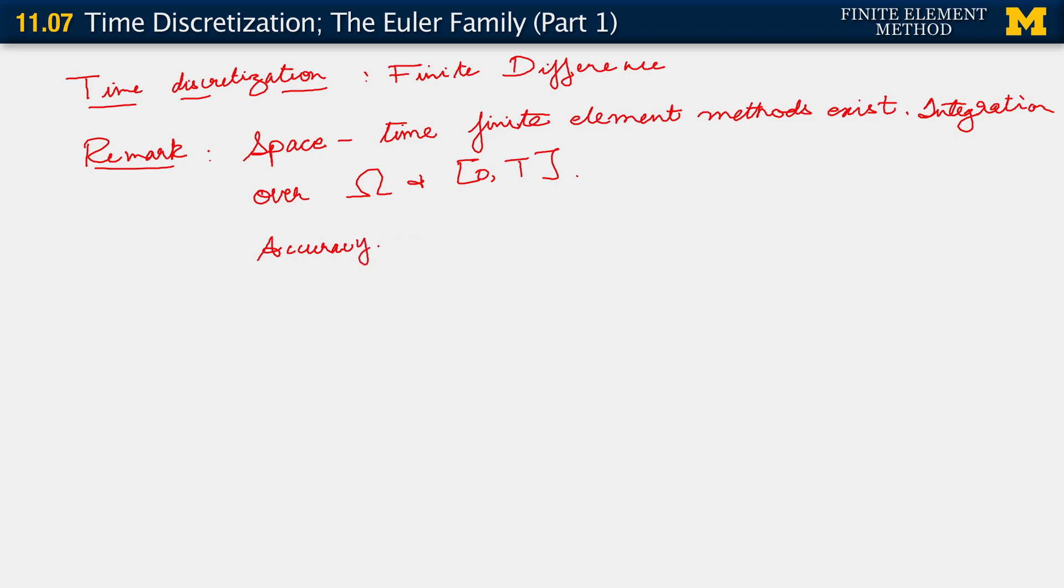The accuracy with respect to time is of higher order than what we will be developing here. Accuracy is of higher order than with finite difference methods. They do come at a cost, though. In particular, one has to develop a finite element mesh over space and time.